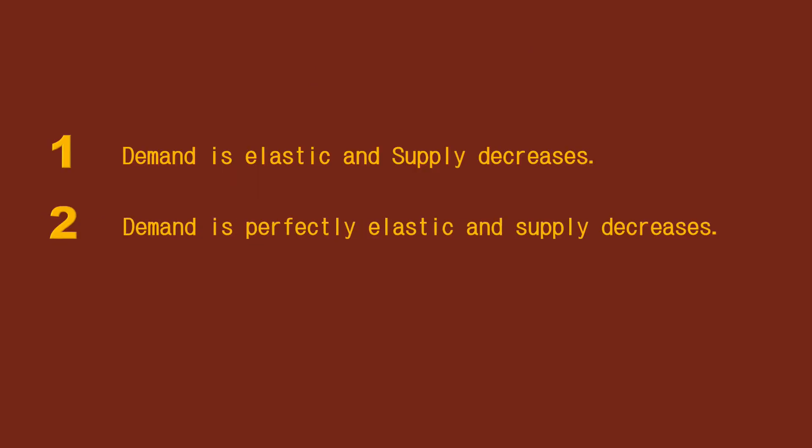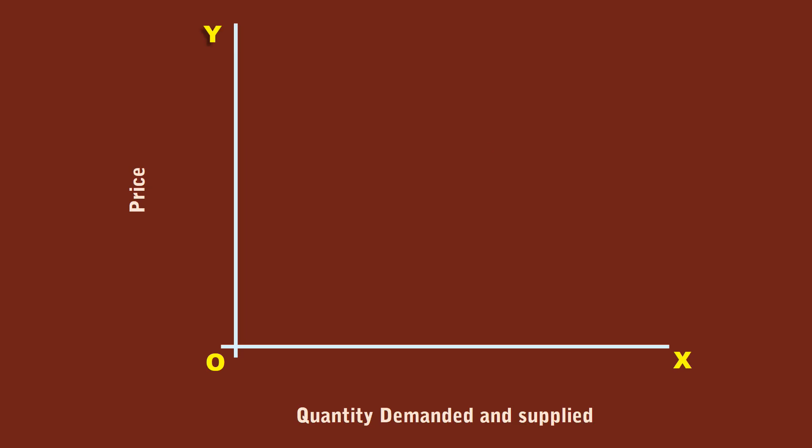2. Demand is perfectly elastic and supply decreases. Demand is perfectly elastic, hence the curve is horizontal and parallel to X axis. The market is in equilibrium at E1.